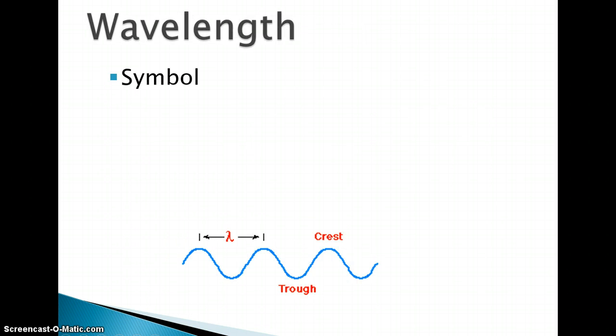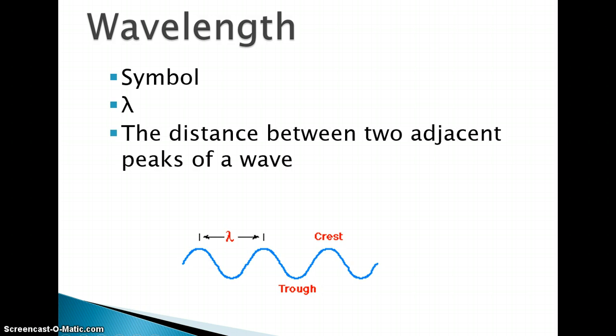A wavelength has the symbol lambda. It's the distance between two adjacent peaks of a wave, and this is marked very clearly from here to here. The units that this is measured in is nanometers.